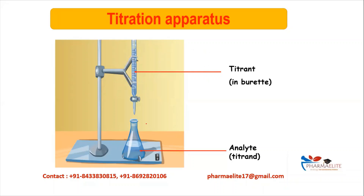The volume of titrant used is calculated as final reading minus initial reading, and this is used for further calculation to get the concentration of the analyte. To avoid confusion: titrant ends with T and is present in the tube — the burette. If you see titrand or titer, that is the analyte.